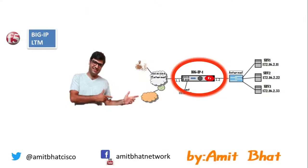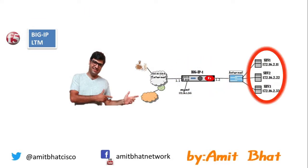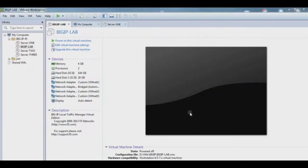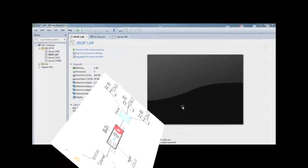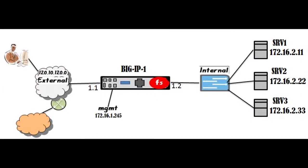BIG-IP is now connected to internal servers: Server 1, 2, and 3. Now we do testing — we change the IP address of our servers according to our lab.